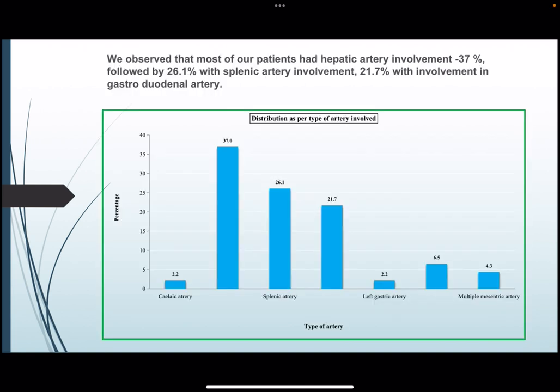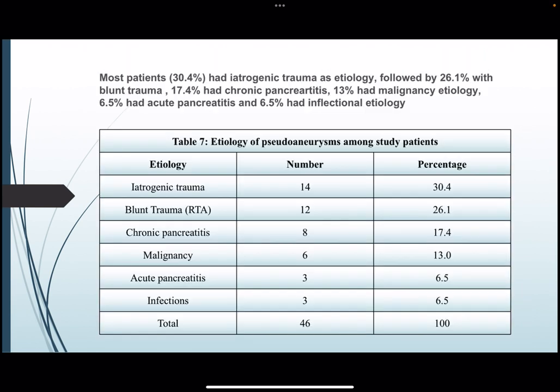Most patients had hepatic artery involvement in 37% of cases, followed by splenic artery involvement in 26.1% of cases, and 21.7% presented with involvement of the gastrointestinal artery. The most common etiology was iatrogenic trauma in 30.4% of cases, followed by blunt trauma in 26.1%. 17.4% had chronic pancreatitis, 13% had malignant etiology, 6.4% had acute pancreatitis, and 6.5% had infectious etiology.